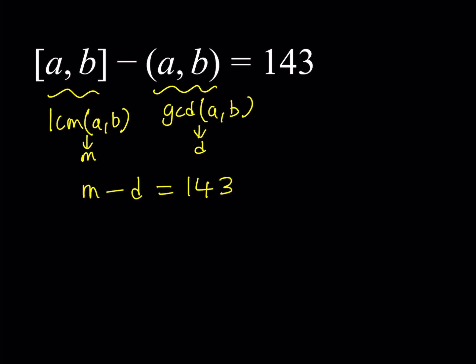A and B are interchangeable, so when I write my answer I'm not necessarily going to worry about ordered pairs, but rather write it as a set. M minus D equals 143 — you could plug in some numbers and guess and check, but that's not a good idea. Let's do it more systematically using some tools from number theory.